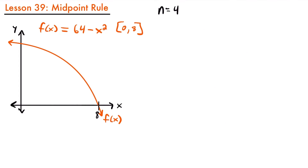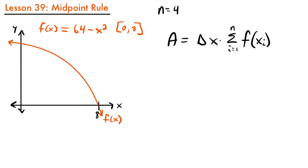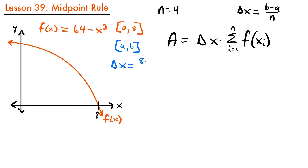We can approximate the area using the formula: delta x times the sum from i equals 1 to n of the function evaluated at x sub i, where delta x represents the width of each rectangle and f(x sub i) represents each of the heights. Delta x equals b minus a divided by n, where b and a correspond to our interval and n is the number of rectangles. Here a is 0 and b is 8, so delta x equals 8 minus 0 divided by 4, which equals 2. The width of each rectangle is 2.